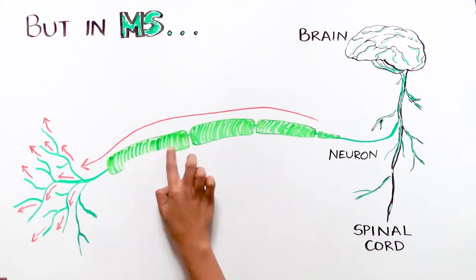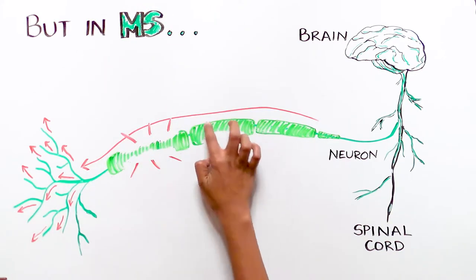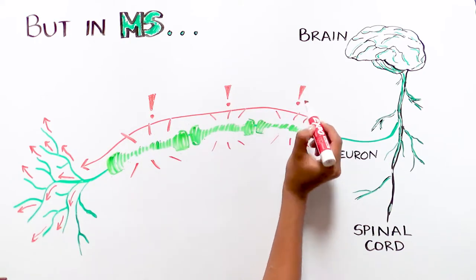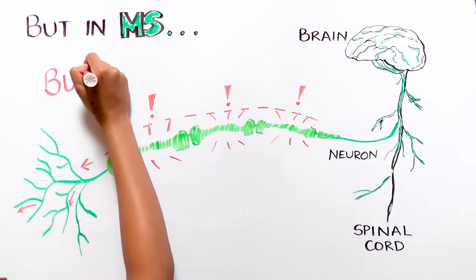In patients with MS, the myelin insulation around the neurons becomes damaged, so the signals from your brain to the rest of the body go haywire. Why does this happen?